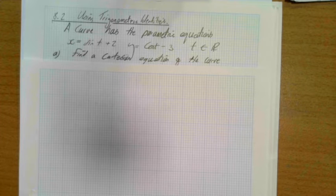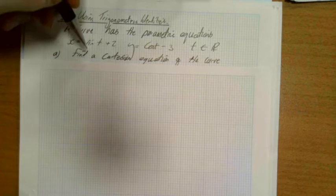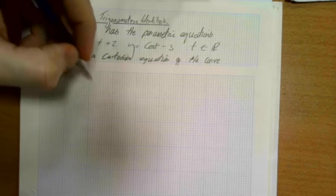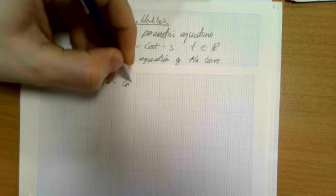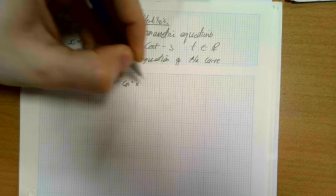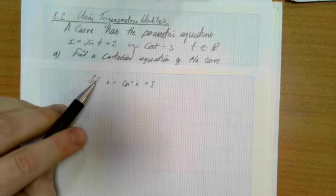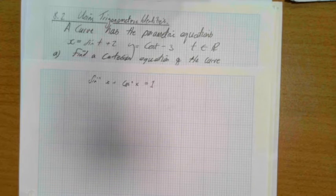So you might want to just pause and think, how would I do that? Maybe even have a crack at it if you're feeling confident. So what were you thinking? Maybe you were thinking this involves sine and cos, so maybe this is to do with sine squared plus cos squared being equal to 1. Because of course that's going to work for any variable including t. If you were thinking that, you're 100% right.